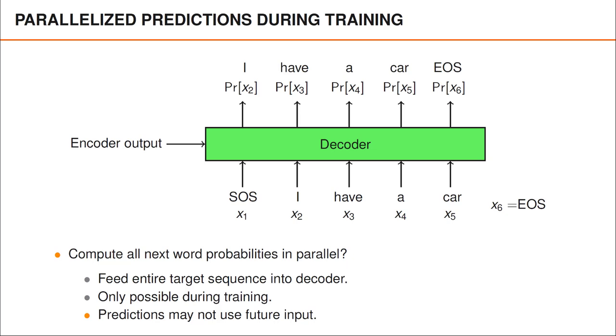Finally, in order to work, we need to design the network such that it cannot cheat. That is, when computing the probabilities of the next word in the sequence, it obviously should not have access to that word. For instance, when computing the probabilities of x2, the network should only have access to the output from the encoder and x1, which in this case is the start of sequence token.